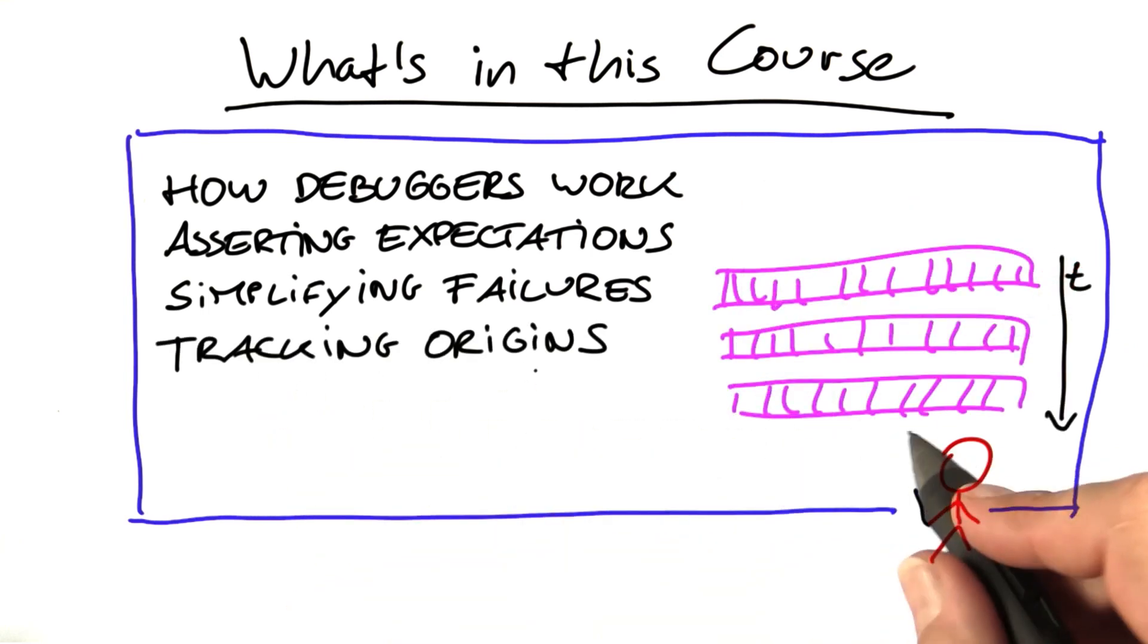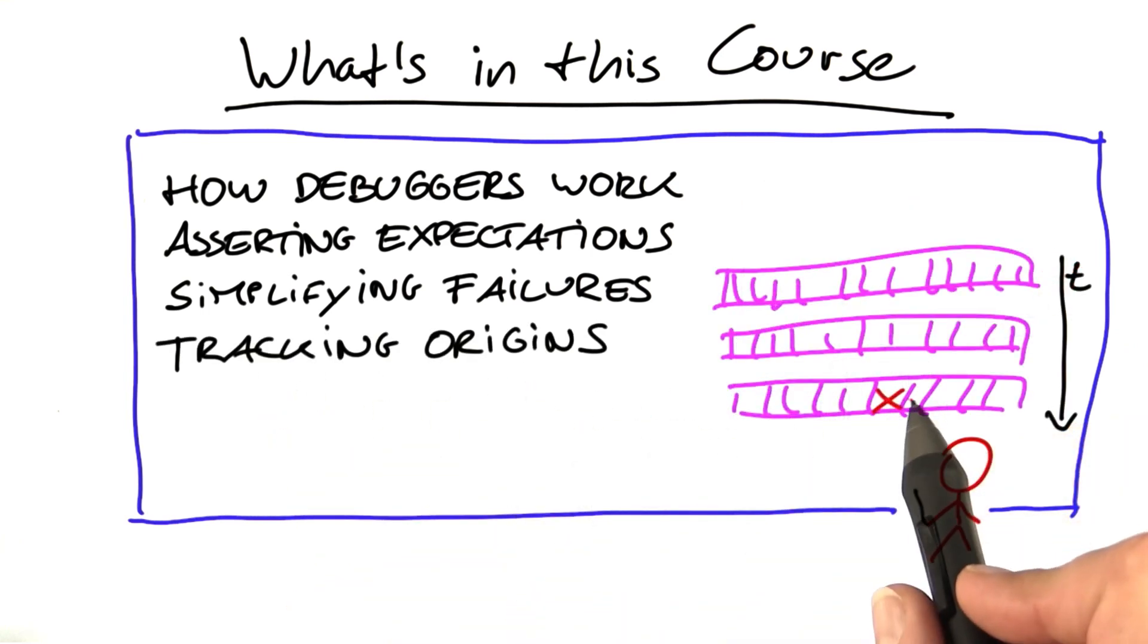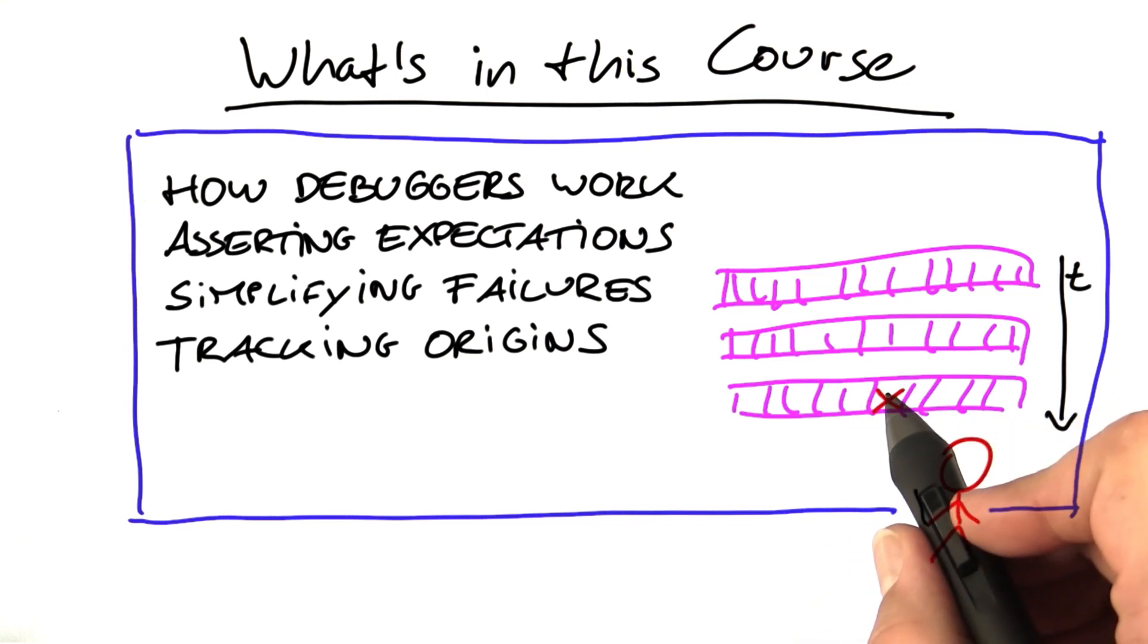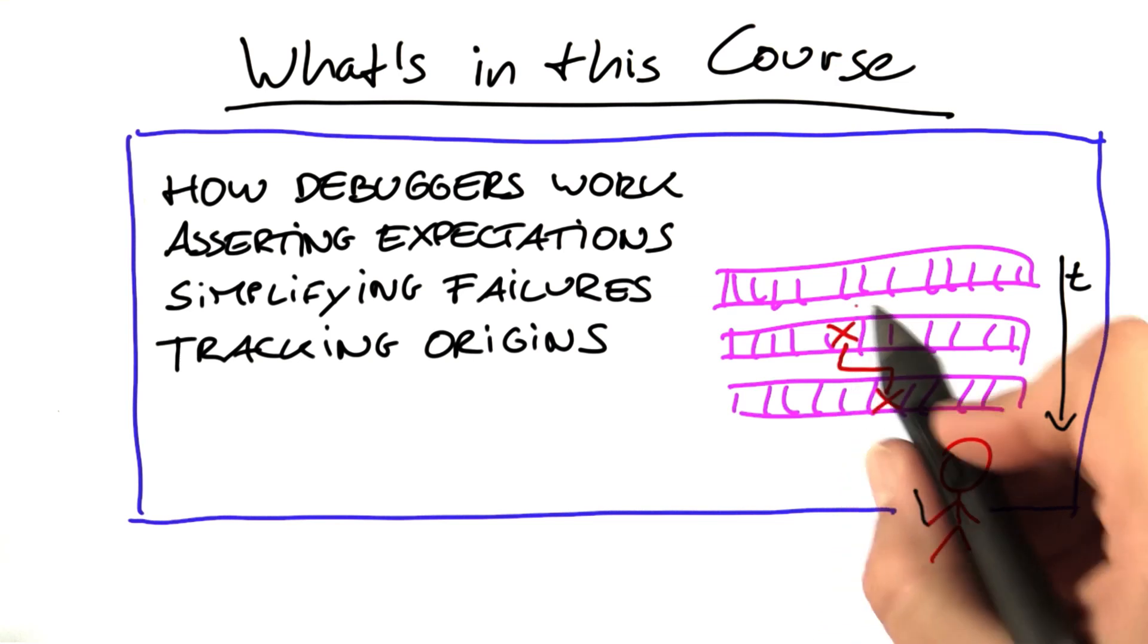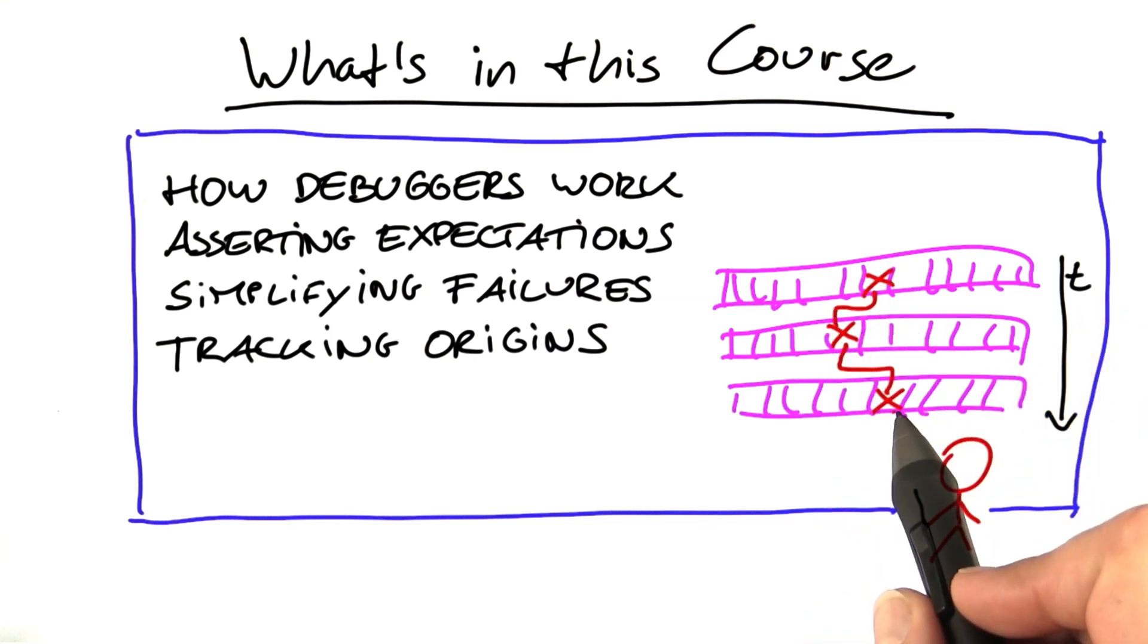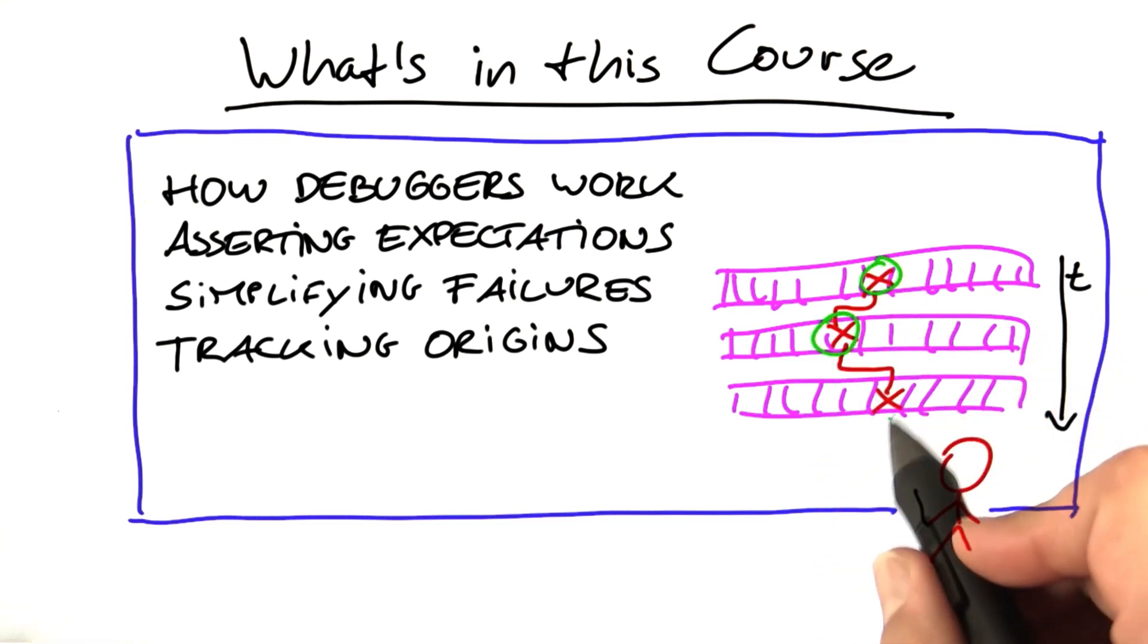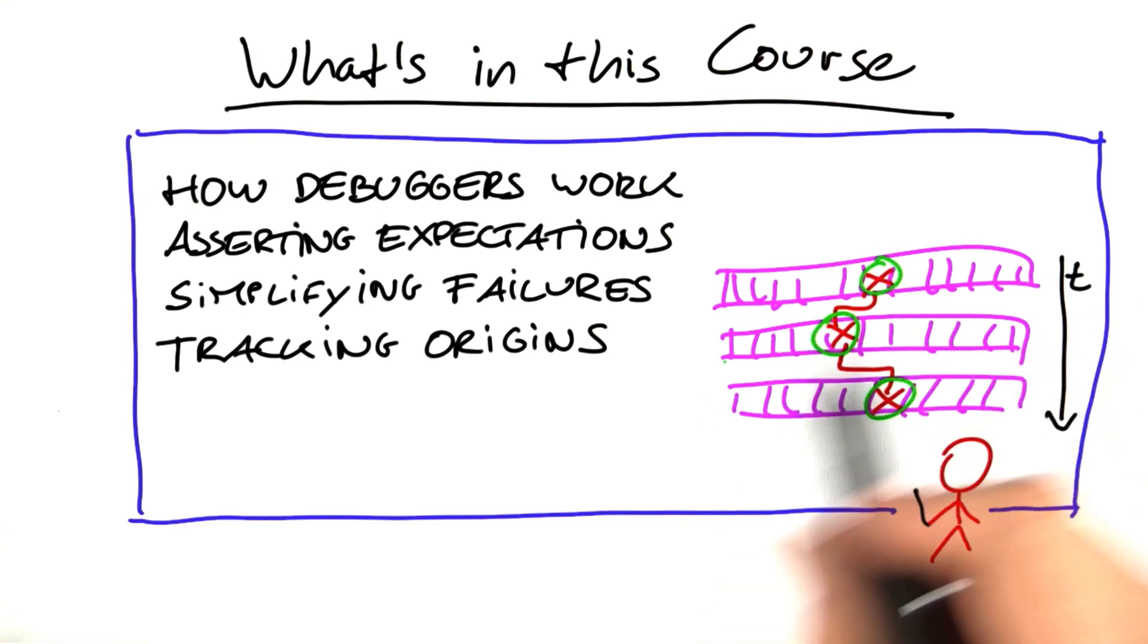In the next unit, I'm going to show you how to find out where a specific failure came from. If you see an execution as a series of states, we're going to explore techniques that help you tracking the way of an error all through the program execution. And on top of that, we're going to build a tool that isolates such cause-effect chains automatically.